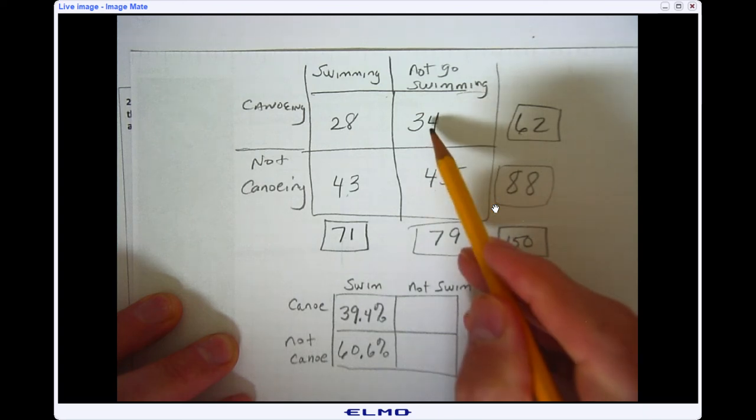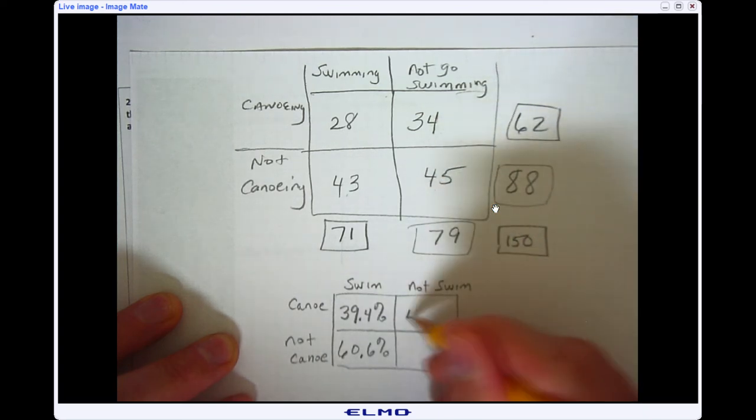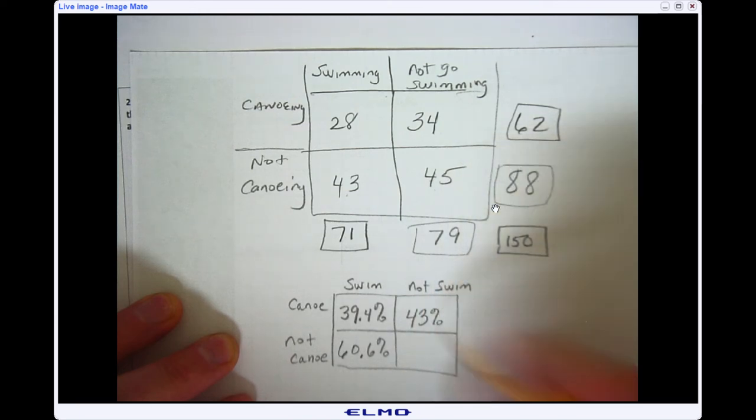I'm going to do the same thing for this one. I'm going to go 34 divided by 79, which is 43%. And then I'm going to do the same thing, 45 divided by 79, which would give me 57%.